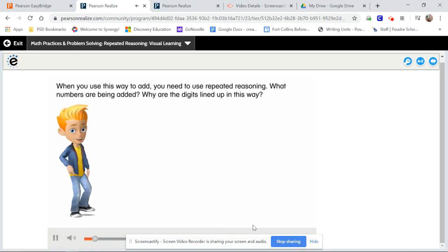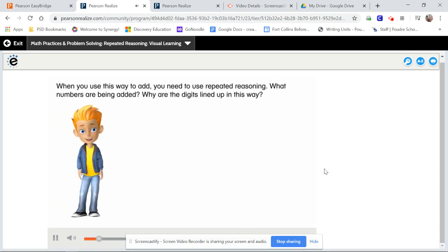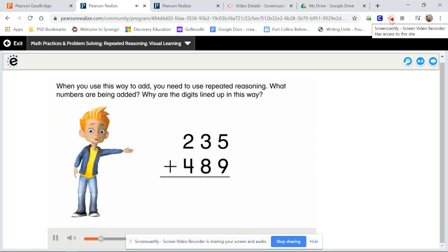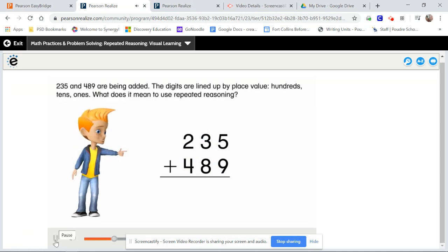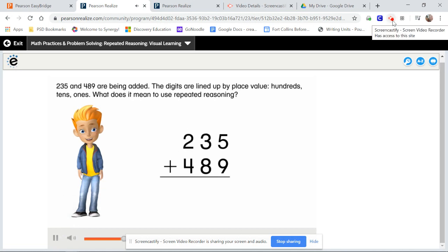When you use this way to add, you need to use repeated reasoning. What numbers are being added? Why are the digits lined up in this way? 235 and 489 are being added. The digits are lined up by place value. Hundreds, tens, ones.